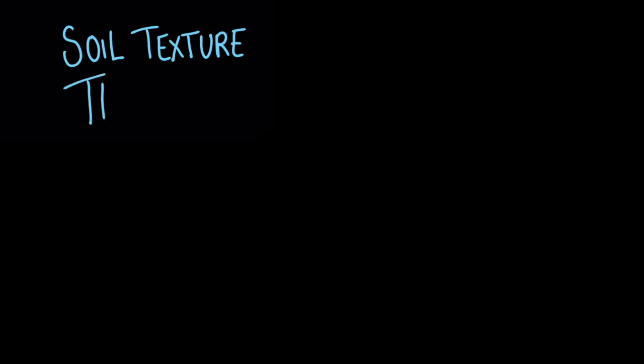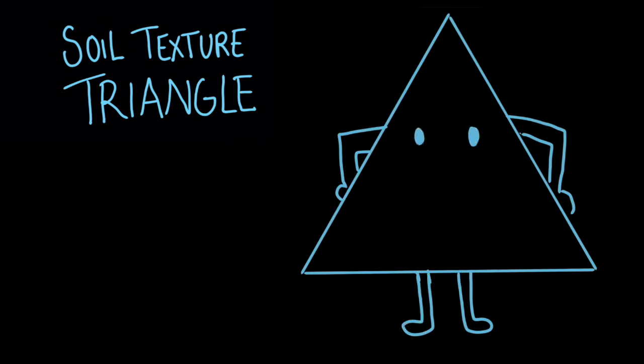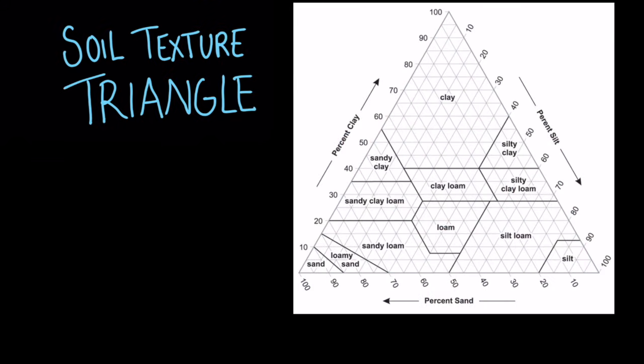This is where a helpful diagram called the soil texture triangle comes in. The soil texture triangle. The triangle allows us to place any soil sample into one of 12 different soil texture categories. The 12 different categories are broken up based on the percentage of silt, clay, and sand in the soil. To see how this works, let's do an example.